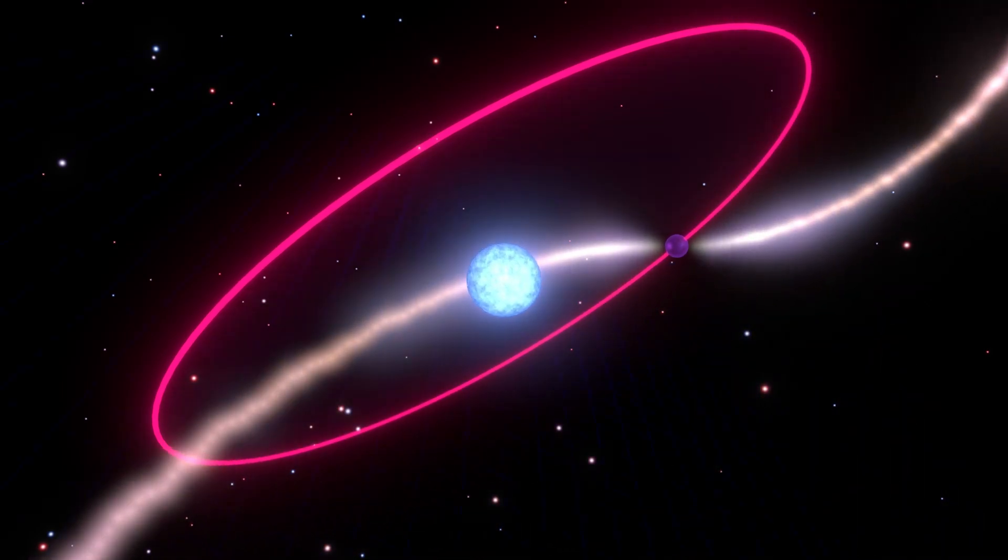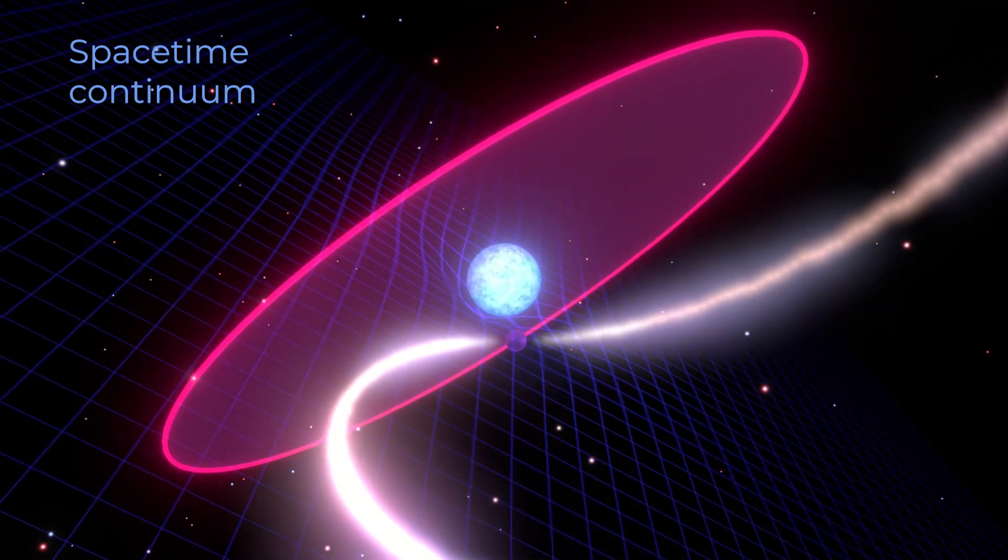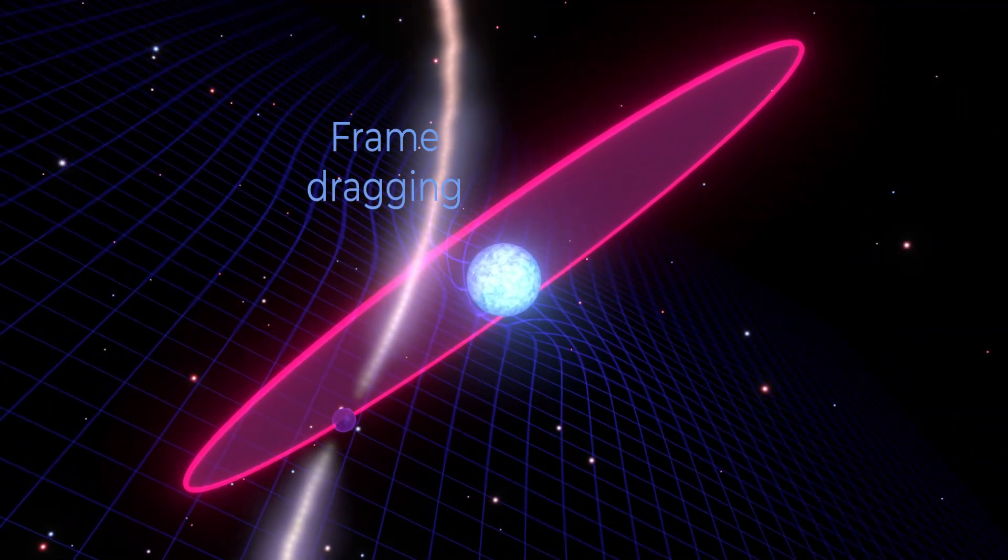In our system the rapidly spinning white dwarf drags space-time a hundred million times more strongly than the Earth would, causing the entire orbit to tumble in space.